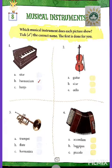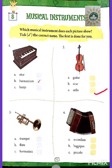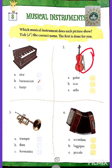The second one, as you can see, is cello. It is not a guitar — it is cello. Guitar does not have this stick. And sitar is a bigger version.